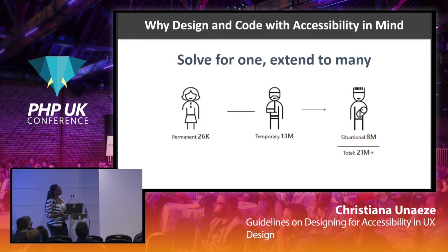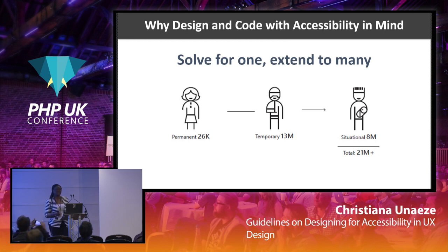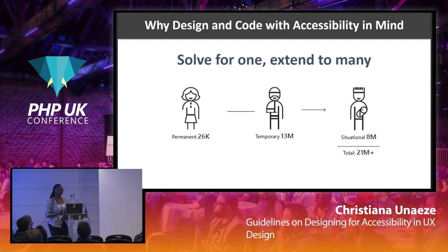To sum that up: in solving one problem for a small group of people, you extend the solution to a wider variety of people. One statistic I came across is that about one in five people — roughly 20% of the population — experience some sort of impairment when accessing the web or apps. That's about 20% of your potential audience that you will be eliminating if your apps and websites are not accessible. But in making your site accessible to a small group, you really do extend that solution to a wider audience.